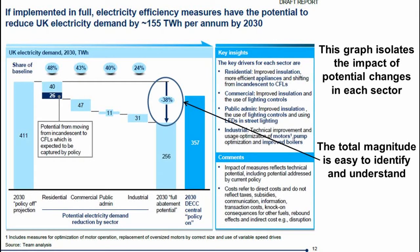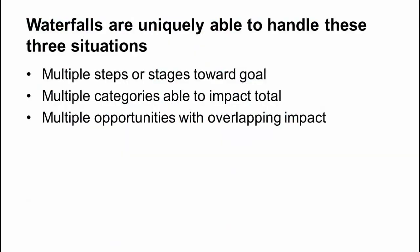Now that's a great reason to use a waterfall chart, but there are actually a couple of other ones. There are some situations where really the only thing to handle it is a waterfall. The first one is what I'm calling multiple steps or stages toward a goal — for instance, you have a project where there are multiple phases, and each phase produces some impact that goes toward the total. When you're dealing with that and discussing with your executive team, the waterfall chart should absolutely be your default option.